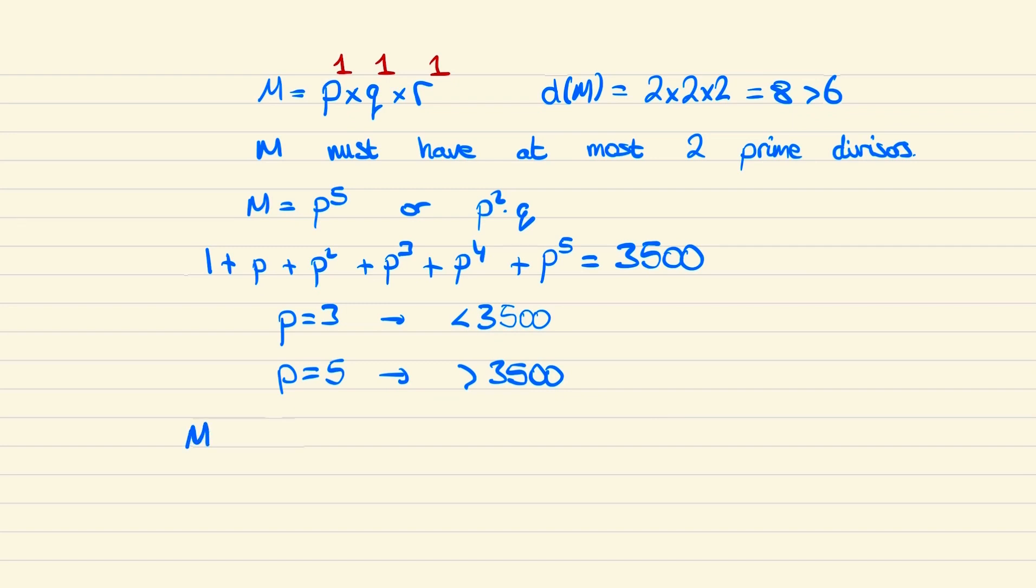So if we then consider when M is p² times q, then the sum of these divisors would be 1 + p + q + pq + p² and finally p²q, which will give a total of 3500.